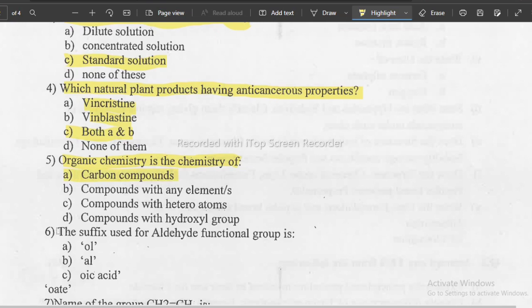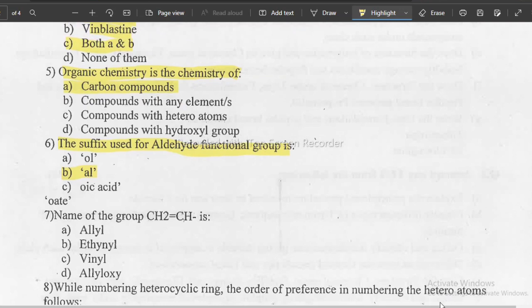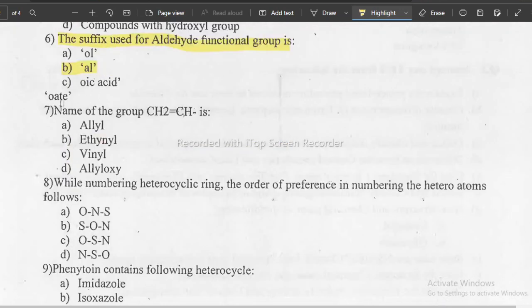Next question: the suffix used for aldehyde group. Which suffix do we use for aldehyde group? That is 'al', that is B. Correct answer is B.